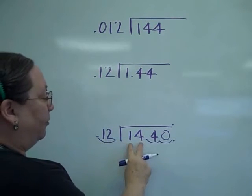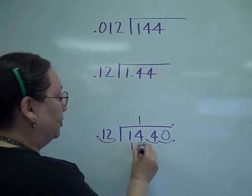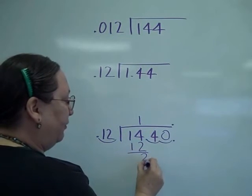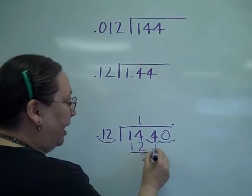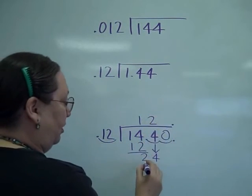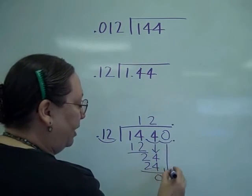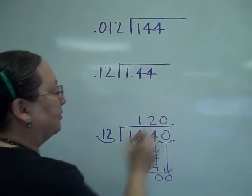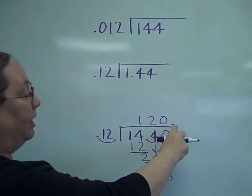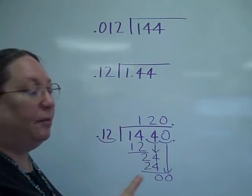12 into 14 is going to go 1. 1 times 12 is 12. 2 left over, bring down that 4. 12 into 24 is 2. Nothing left over, bring down the 0, and I pick up a 0.